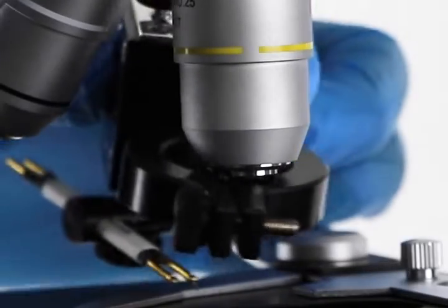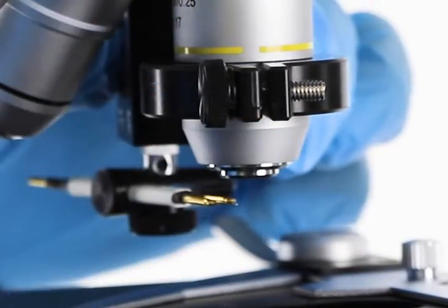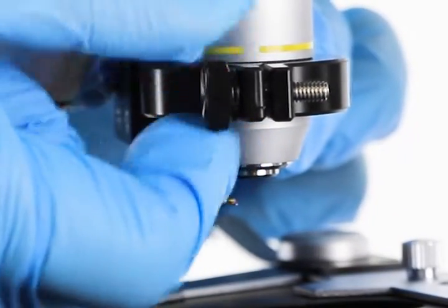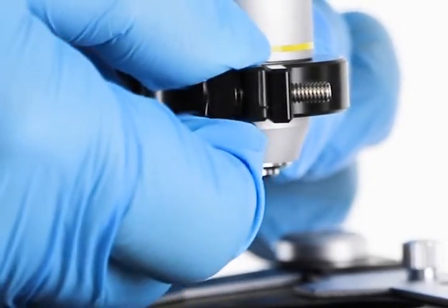Lower the stage all the way and mount the filament holder on the objective. To do this, slide the objective ring clamp of the filament holder over the 10x objective and tighten the thumb screw to secure it.